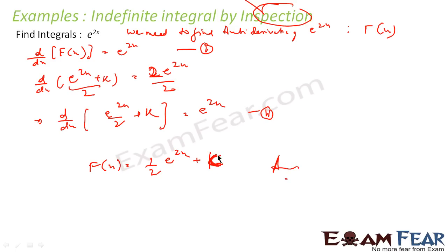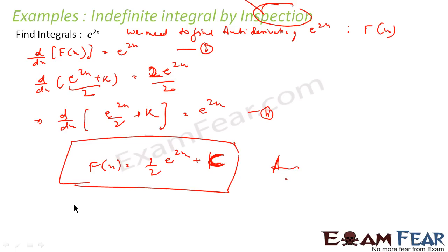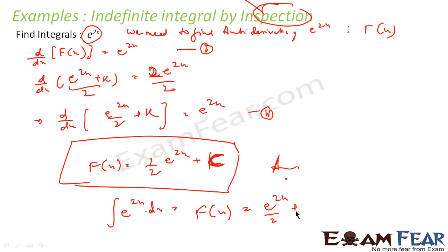Normally we use c by convention, so you can use c to be on the safe side. So here also, we found the integral of this. We can see that the integral of e to the power 2x dx is F(x), and that is nothing but e to the power 2x by 2 plus c. So I found the integral just by my differentiation knowledge. Here I am not using any formula of integration as such — I just know how to differentiate, and with that knowledge I am finding the integral.